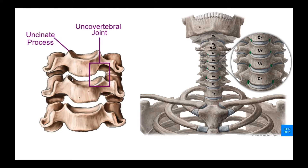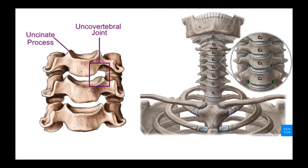The vertebra below has an uncinate process that sticks up on either side, and that forms a joint with the inferior portion of the vertebra above — this joint is the uncovertebral joint, or UV joint. Now let's go into the timeline of the uncinate process and see how it affects the structure and function of cervical intervertebral discs.